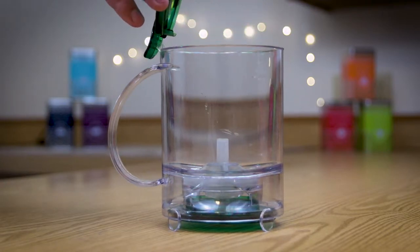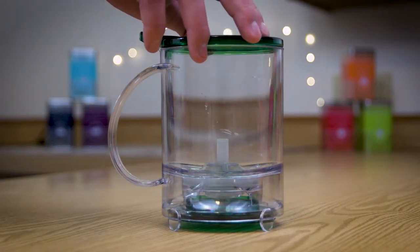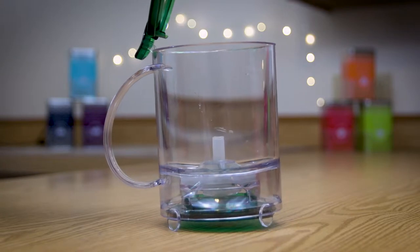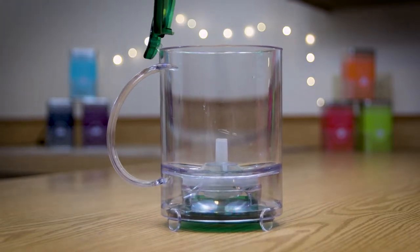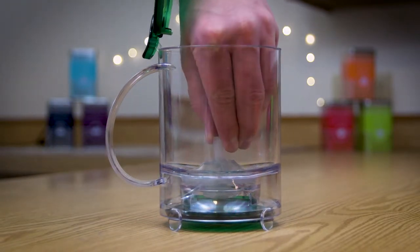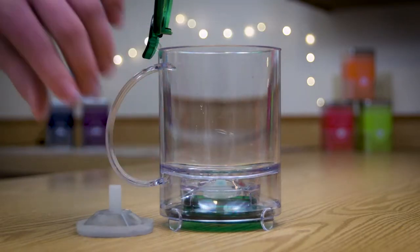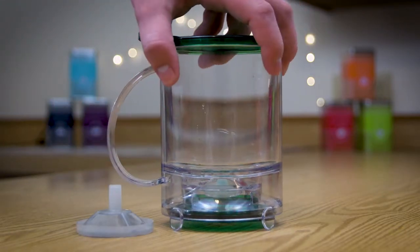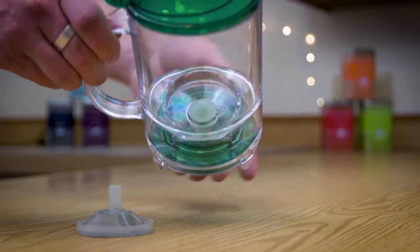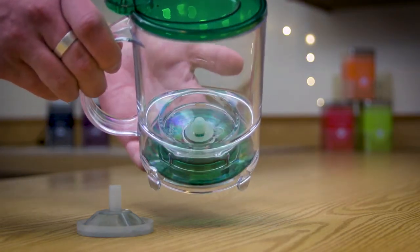The hinged lid provides easy access to the main brewing chamber. A filter at the bottom of the chamber pops in and out for easy cleaning, and at the very bottom there is a pop-up valve similar to the one you would find on a coffee pot for draining the Teavana.